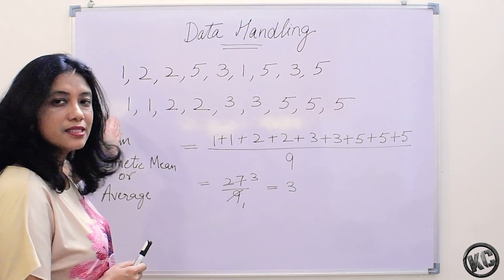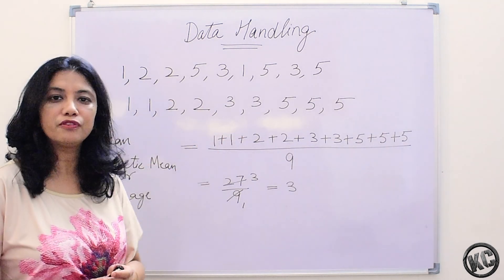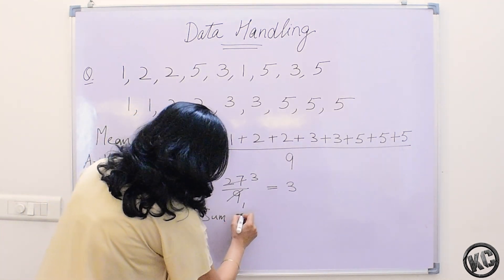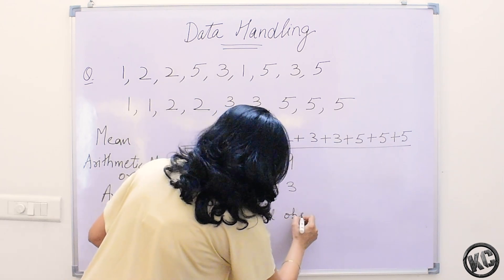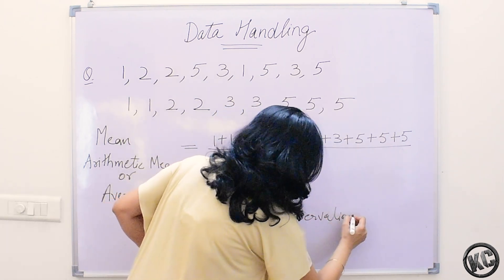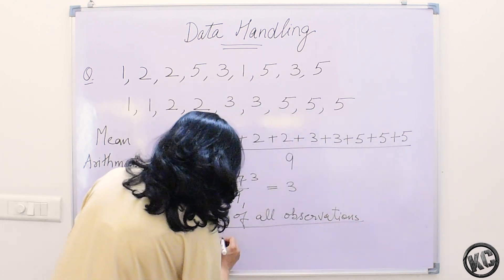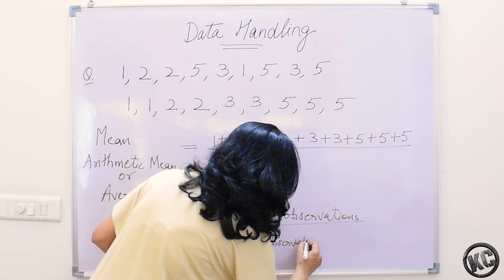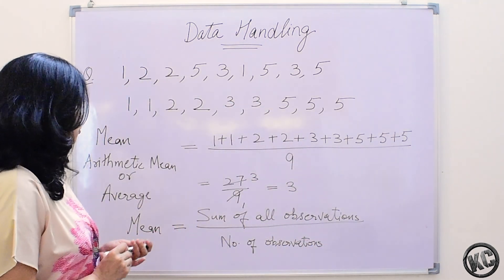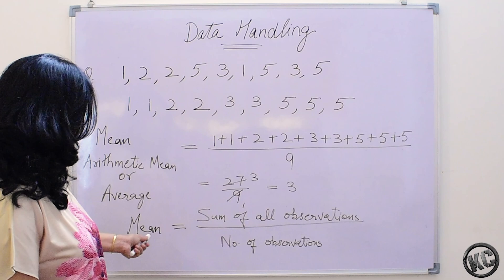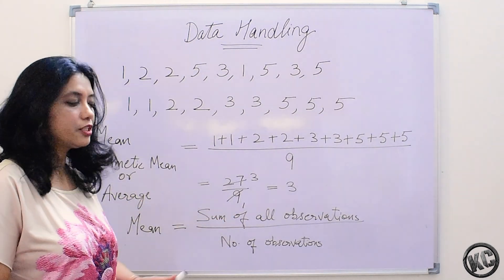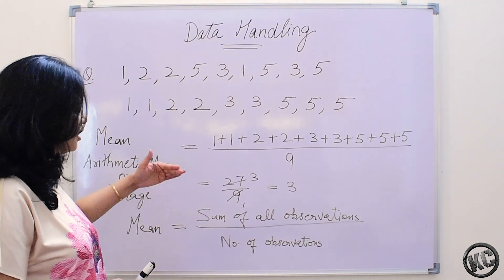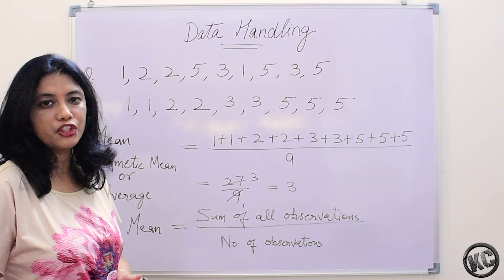Mean will always lie between the lowest observation and the highest observation of the data. Arithmetic mean is equal to sum of all observations divided by number of observations. We will sum up all the values given in the data and then divide it by the total number of observations.